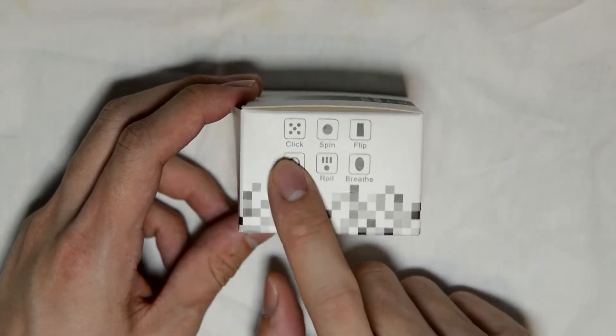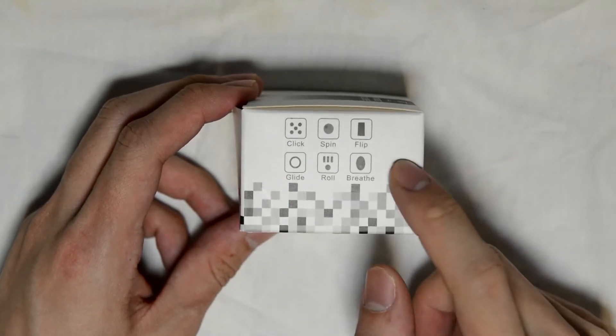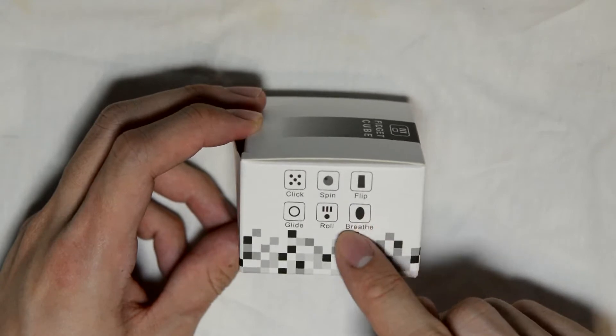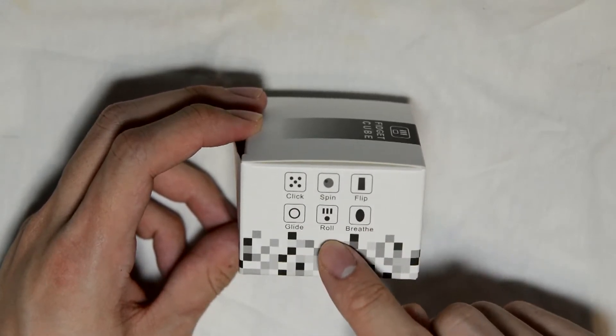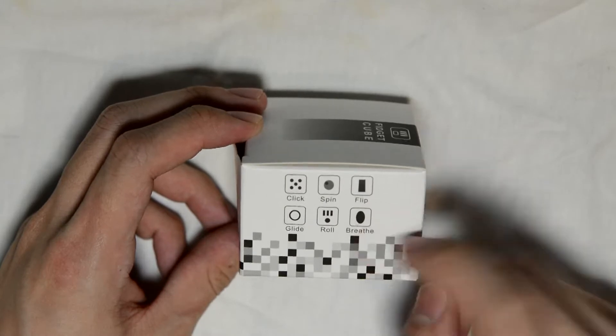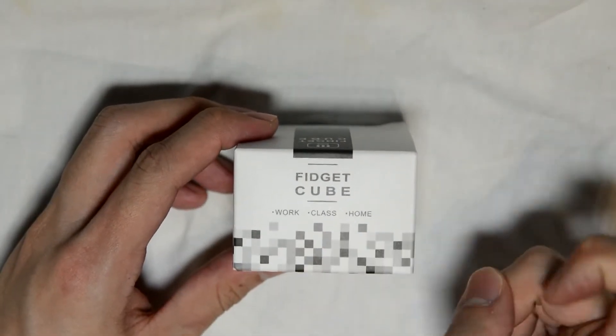You have the clicking kind of things like buttons. You have a spinner, a spinning wheel. You have the glide. I believe this is something like your analog stick. You have roll. I have no idea what this is. So yeah, you can use it in your work, your class, and home, fidget cube.